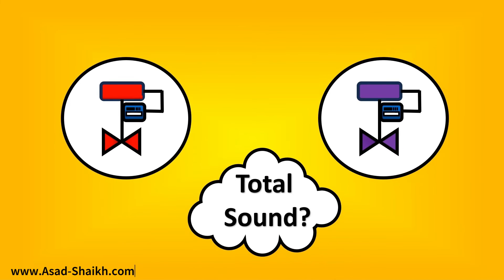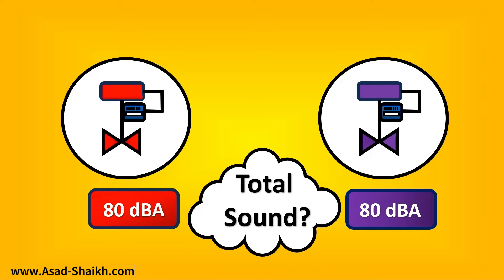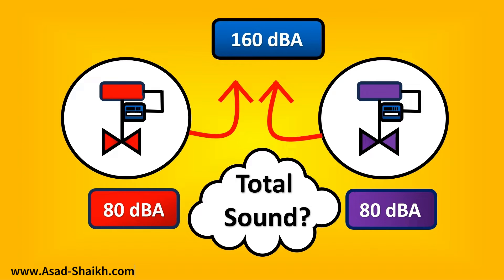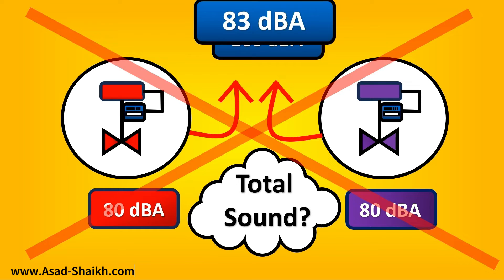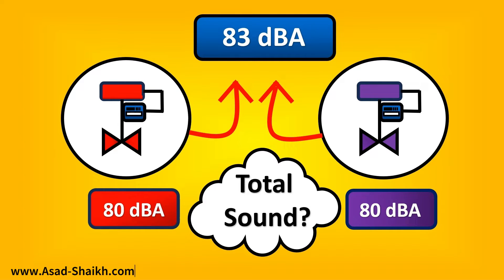Imagine we are having two valves. The first valve is having a noise of 80 dBA. The second valve is also having a noise of 80 dBA. Can you tell me what is the total noise? If the answer is 160 dBA, then this answer is incorrect. Why? Because the total noise will only be 83 dBA.